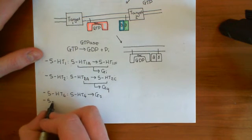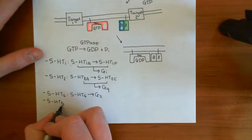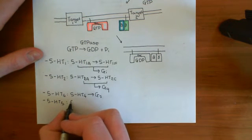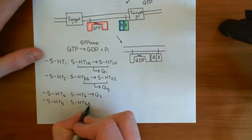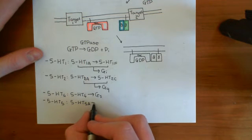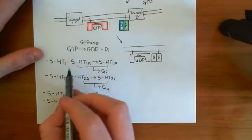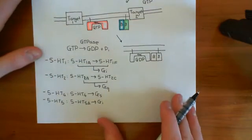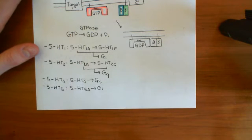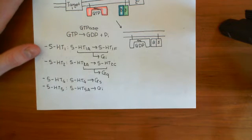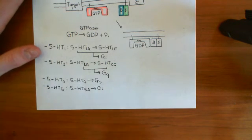Then we have the 5-HT5 family of serotonin receptors. This, remember, only contained one member in humans, which was the 5-HT5A receptor. This receptor is a Gi-coupled receptor. Like the 5-HT1 family, it will also activate heterotrimeric G-proteins which have an alpha-i subunit — either G-alpha-i1, G-alpha-i2, or G-alpha-i3. Therefore, it will lead to the inactivation of adenylyl cyclase enzymes.